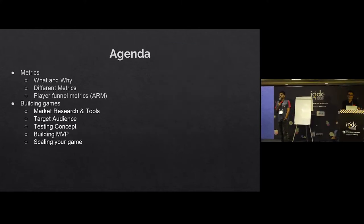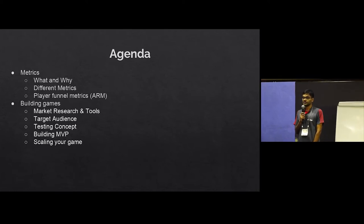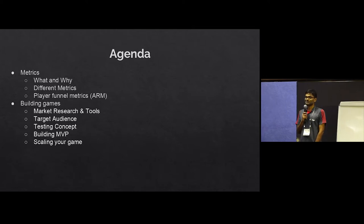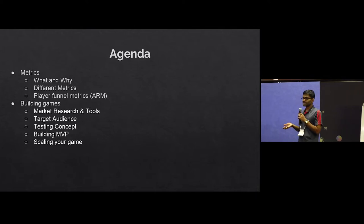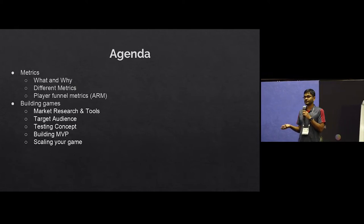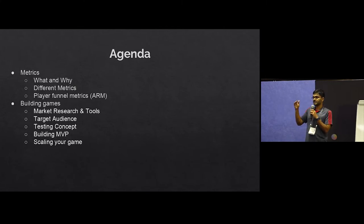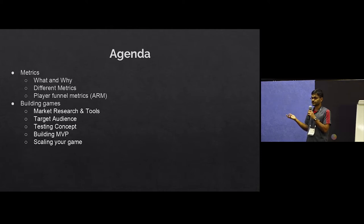We have split the session into two parts. The first part we are going to talk about metrics, because that is critical when you start looking at a game from a data point of view. We won't be talking about game design aspects, but this will mainly hinge on how do you use metrics to make sense out of the design you have come up with. We will talk about why you need metrics, what are the different kinds of metrics, and cover the funnel — acquisition, retention, monetization — what metrics are relevant in each phase.